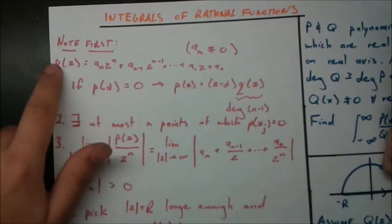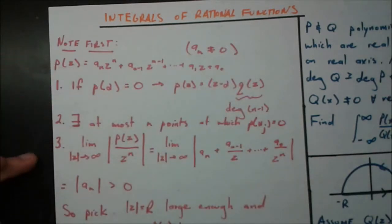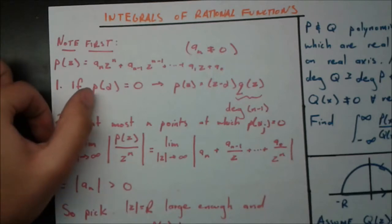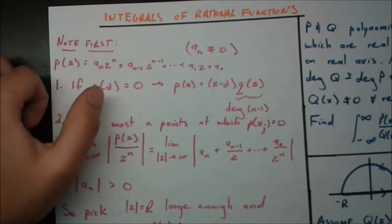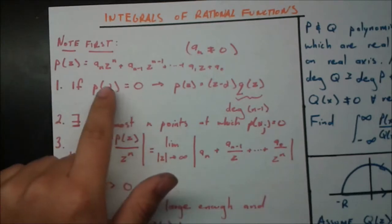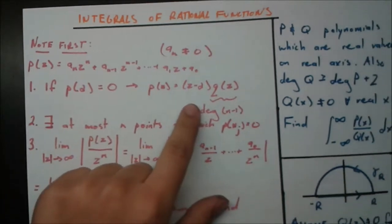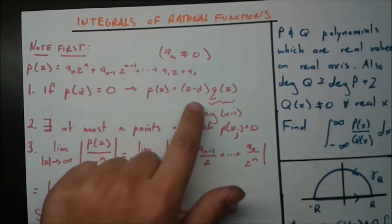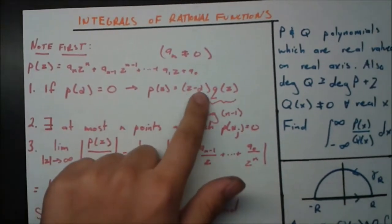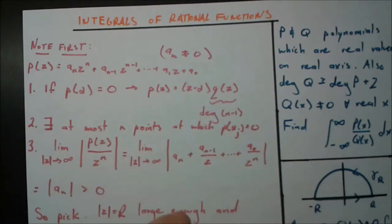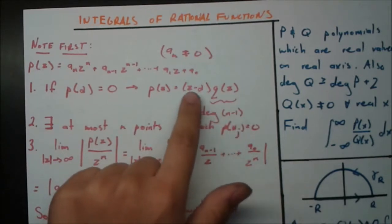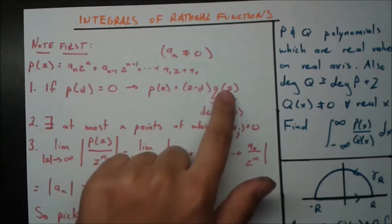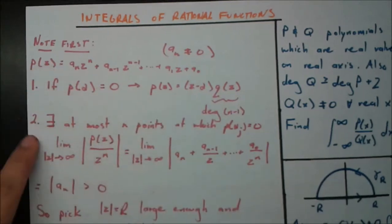We're going to find three facts about this polynomial, and the third one will be the most important to us. Fact one: if P(α) = 0 — meaning α is a zero of P — then using the rules of algebra you can factor out (z − α), and you're left with a new polynomial of lesser degree n−1. So when you multiply them, you get degree n, just as P does.